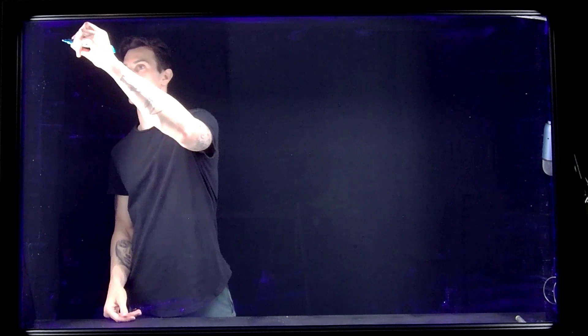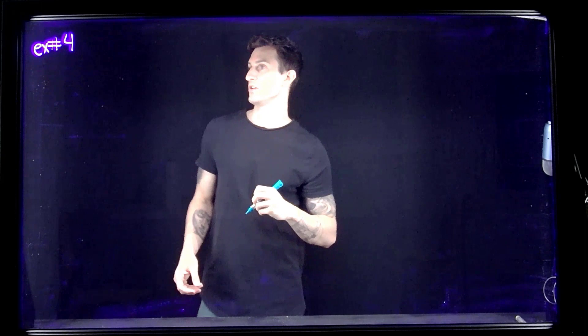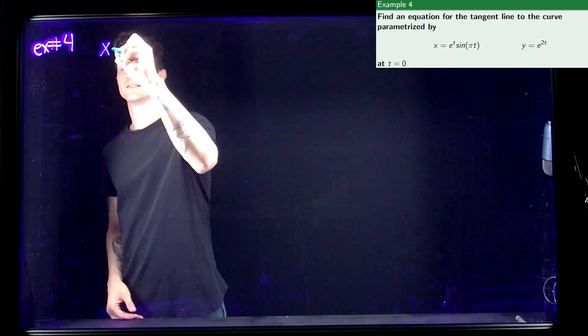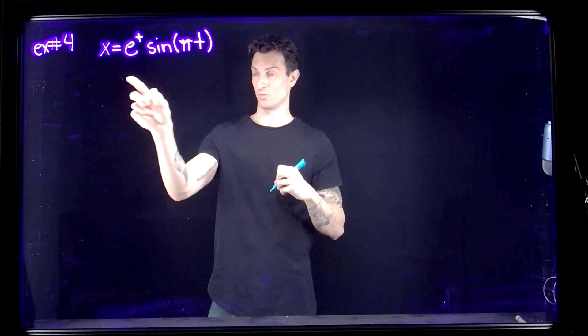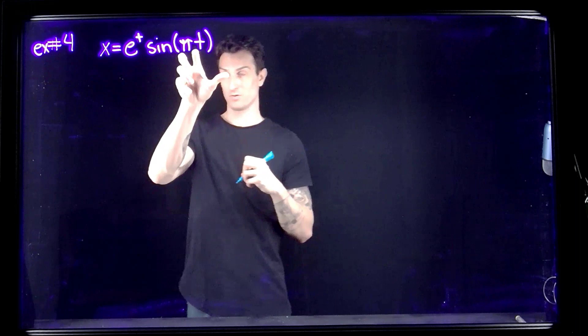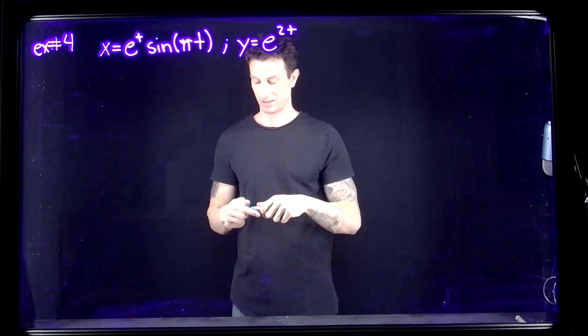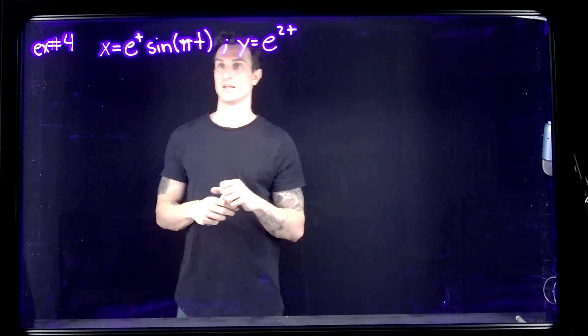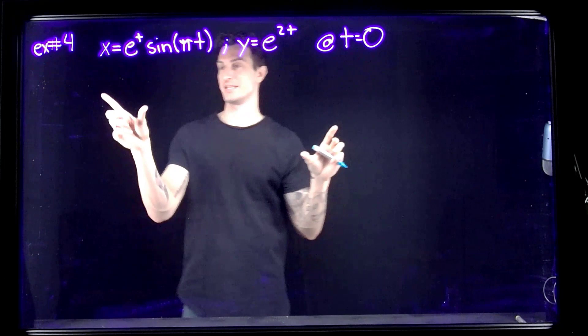Okay, last example for this video — Example 4, finding the equation of a tangent line. We have x equals e to the t times sine of πt — notice this is a function times a function, so product rule, plus a chain rule for the sine. And y equals e to the 2t — another chain rule. We'll find the tangent line at t equals zero.